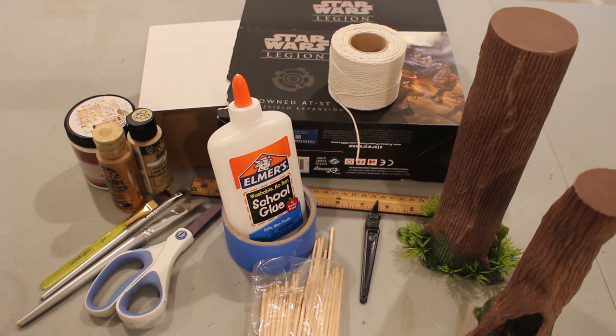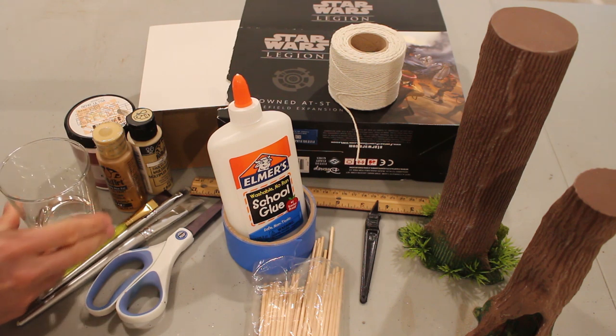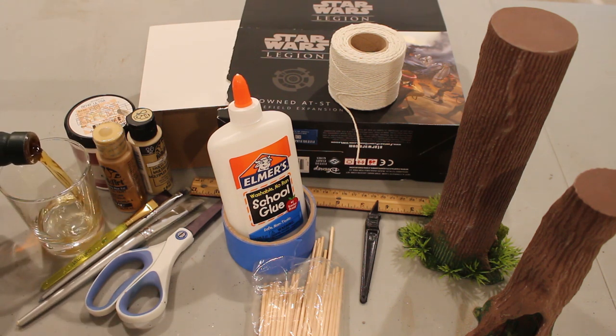For this project you'll need an empty Legion box, string, glue, brown craft paints, scissors, a knife, masking tape, wooden sticks, and a dram of 15 year old single malt Dalmore.